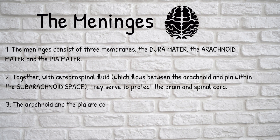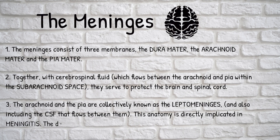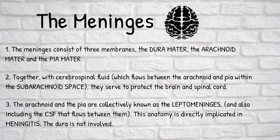The two inner layers, the arachnoid and pia mater, are collectively known as the leptomeninges. This anatomy is what is directly implicated in meningitis, which is inflammation of the leptomeninges — so the pia mater, the arachnoid mater, and the cerebrospinal fluid between them. It's important to note that the dura mater is not involved in meningitis.